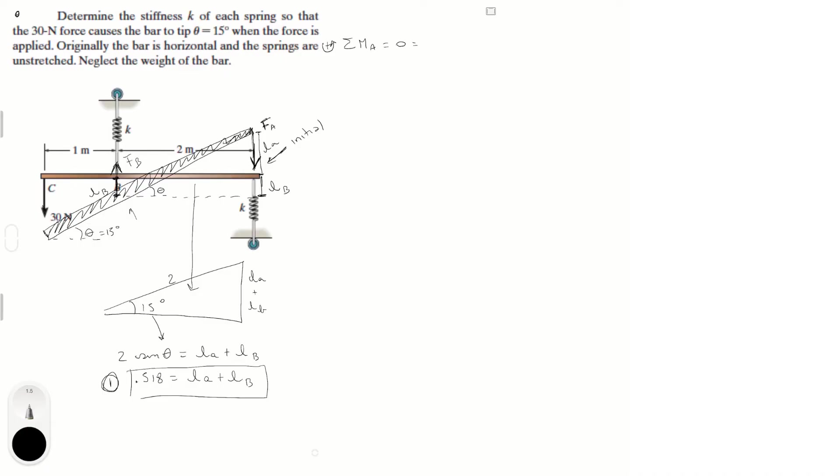So, we got from A which is right here. We got F of B creating a moment times the arm, trying to turn the arm clockwise, which means that it's negative. And this distance, this arm is given by 2 times the cosine of 15 degrees.